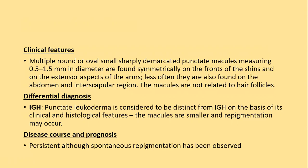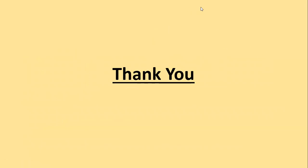The differential diagnosis includes idiopathic guttate hypomelanosis, but punctate leukoderma is distinct on clinical and histological features — macules are smaller and repigmentation may occur. The disease is persistent, although spontaneous repigmentation is observed. This concludes the lecture; thank you all for your patient listening. See you next time with another edition from the same chapter.